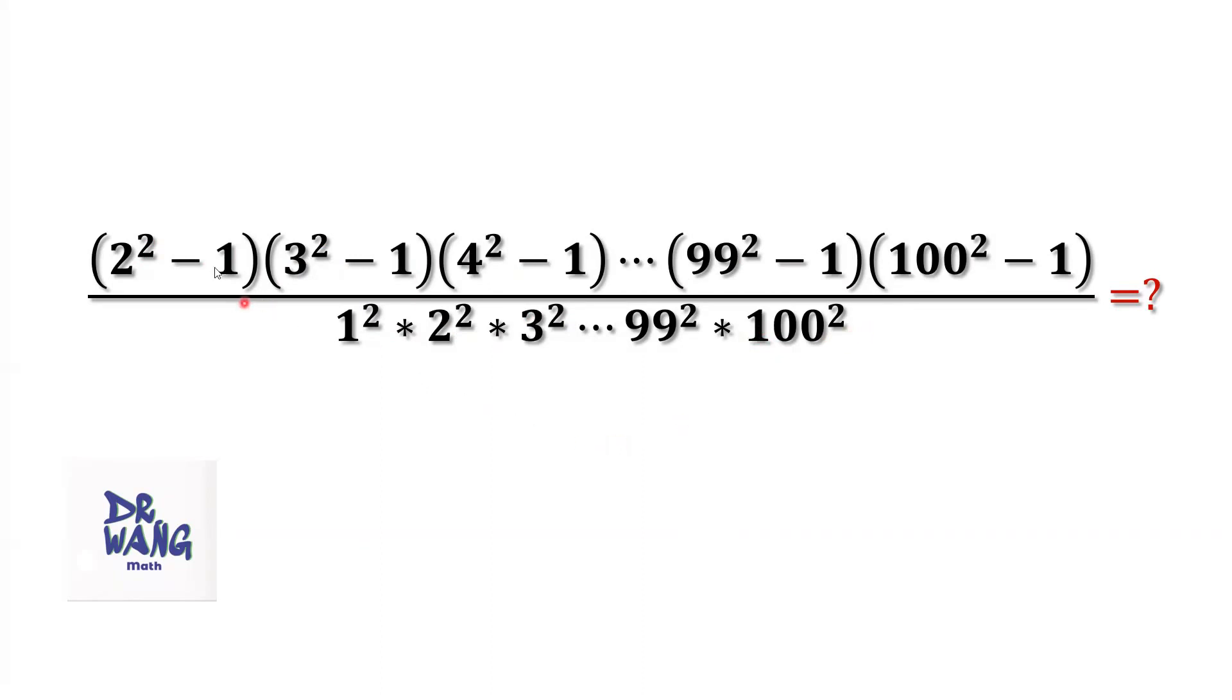Look at the numerator. Each factor is a difference of two squares. 2 squared minus 1, 3 squared minus 1. We can use the square difference formula to simplify each term from the numerator.